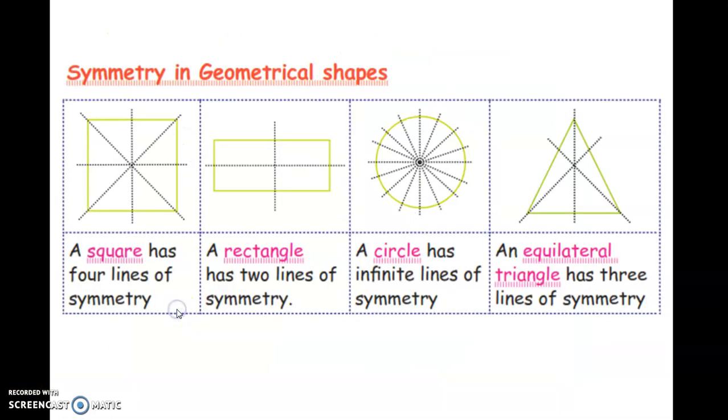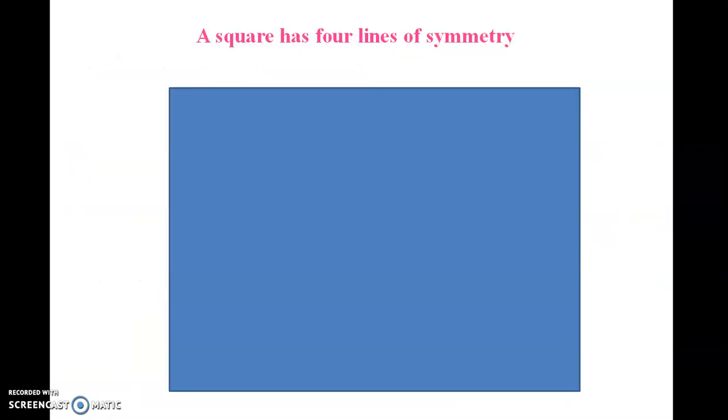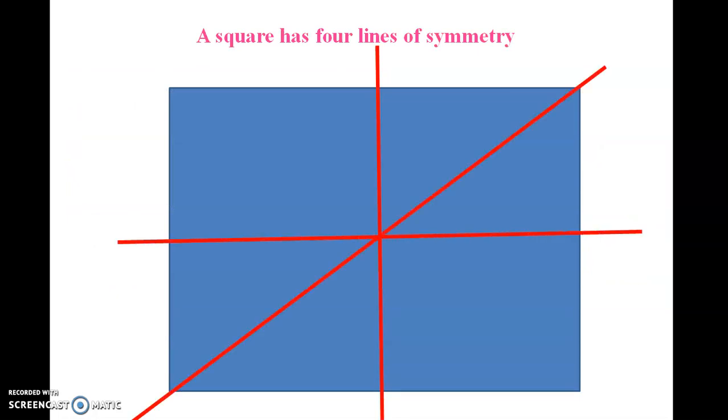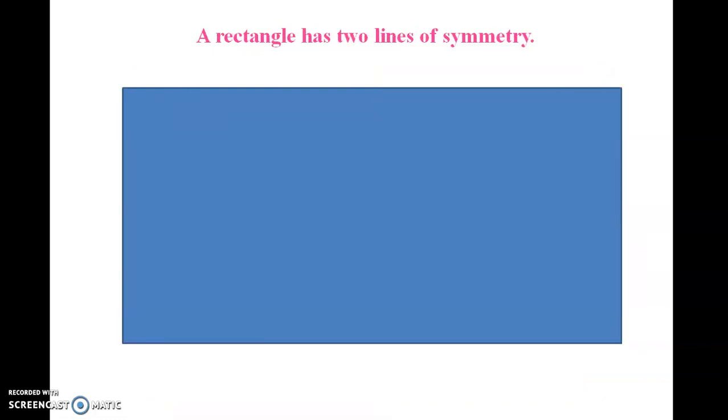Friends, now let us see the symmetry in geometrical shapes. A square has 4 lines of symmetry. A rectangle has 2 lines of symmetry.